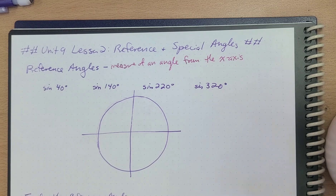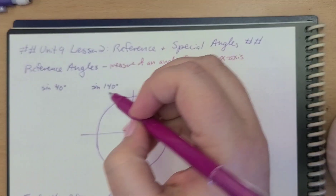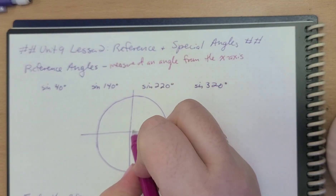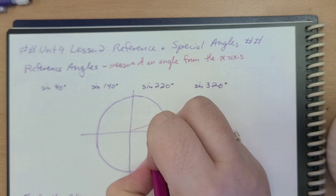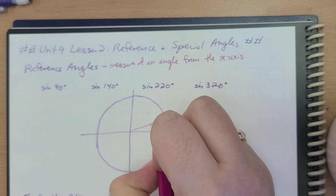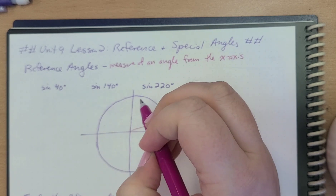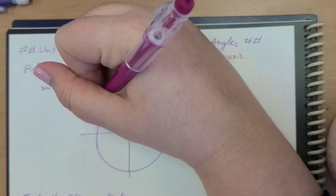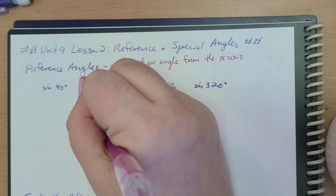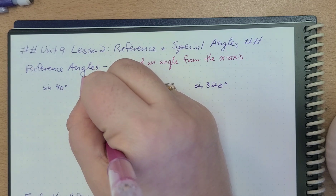So here, if we have the sine of 40, that's going to be roughly right here — this would be like 40 degrees. And if we have the sine of 140, that's going to be roughly right here.